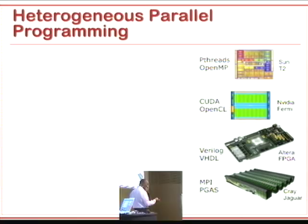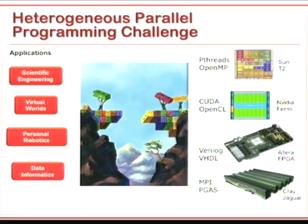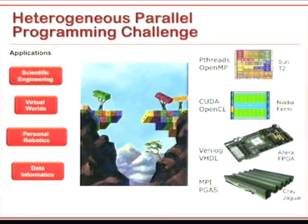The state of the world for a programmer who wants high performance is that you have to descend to these low-level programming models. If I'm an application developer who wants to simulate protein folding, airflow over an airplane wing, large-scale virtual worlds, personal robotics, or large-scale data analysis, I have to descend to these low-level models to get the requisite computation out of modern architectures. There's a gulf between where application developers are and where the architectures are.